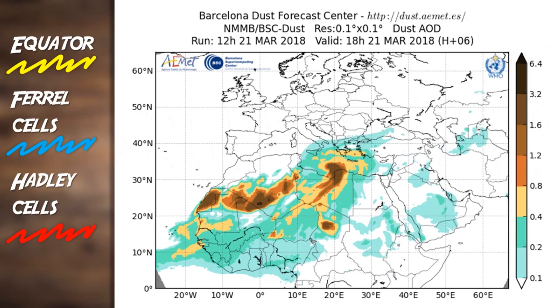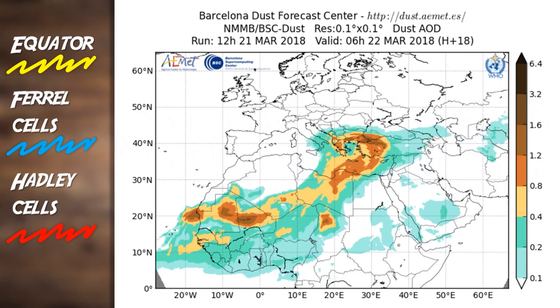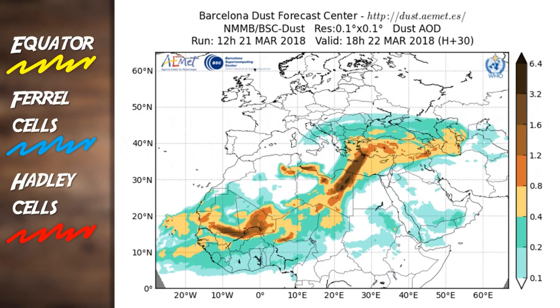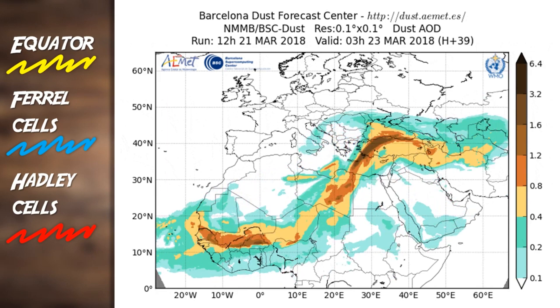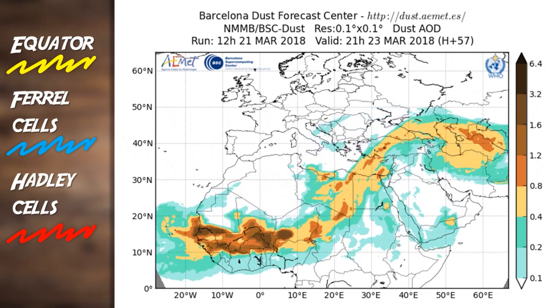Looking at a dust forecast map taken from the Barcelona Dust Forecast Centre, we can see how dust from North Africa moving towards Europe can cause significant dust coverage for countries like Greece.